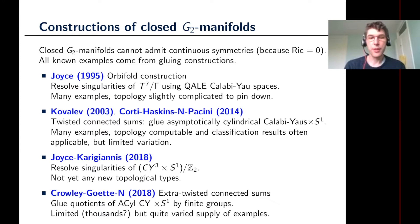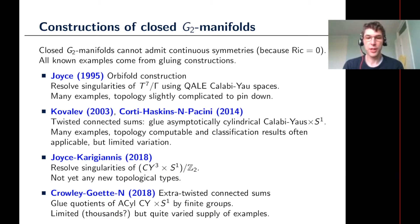A short survey of constructions for closed G2 manifolds: the first examples come from the 1990s by Dominic Joyce. He considered taking a flat torus and dividing by an automorphism group to get a singular flat G2 manifold, then resolving the singularities to get a smooth G2 manifold. This generates a lot of examples, but it's not always easy to understand much about the topology of the results — you can compute some Betti numbers but perhaps not go much further.